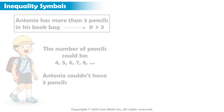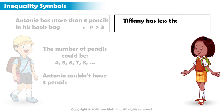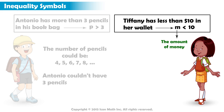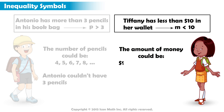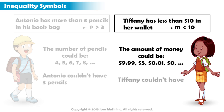Let's try another one. If Tiffany has less than $10 in her wallet, we could represent the amount of money in Tiffany's wallet as m less than 10, where m stands for the amount of money. Tiffany could have $9.99 in her wallet, $5, 1 cent, or even $0. Tiffany can't have $10 because we know she has less than $10.